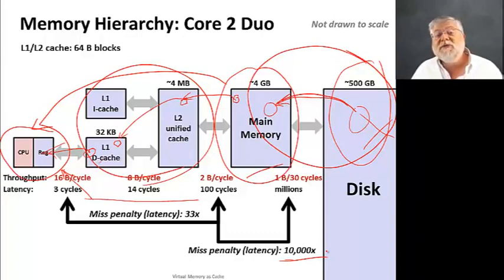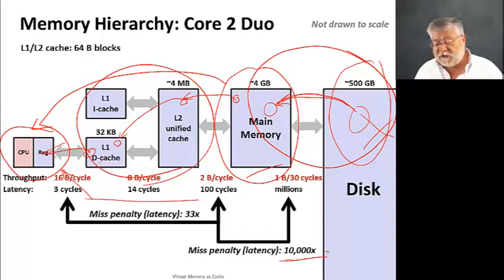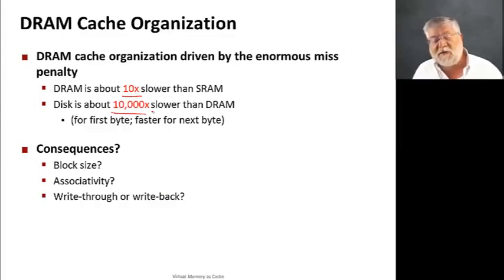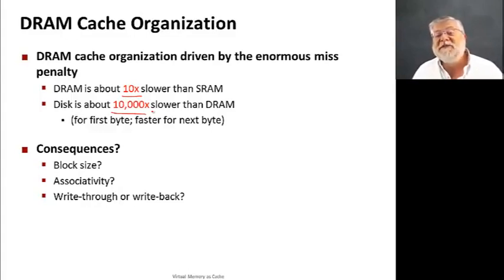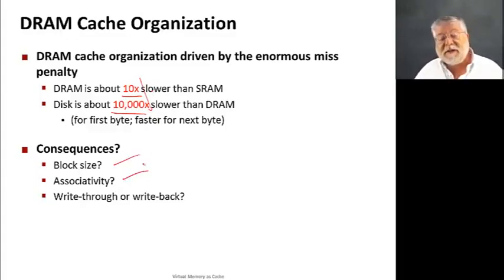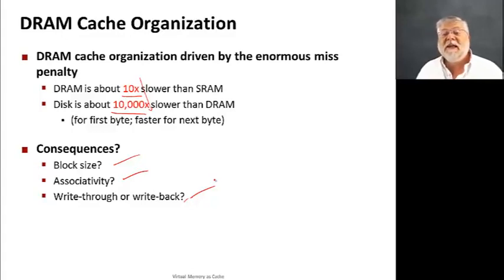So in this case we definitely want to use caching, and we're going to do things a little differently than we did for the L1 and L2 cache because of that huge difference in miss latency. DRAM is about 10x slower than the static RAM inside our CPU, but we're talking about a disk that is 10,000 times slower than the dynamic RAM. What does this difference — now 10,000x instead of 10x — have on the block size, the associativity, and whether we want write-through or write-back? Those were all the decisions we had to make in our cache organization.